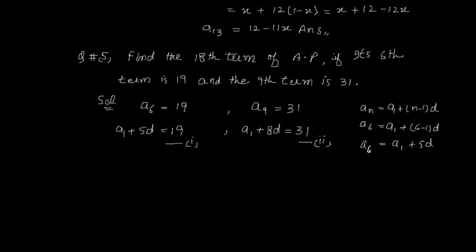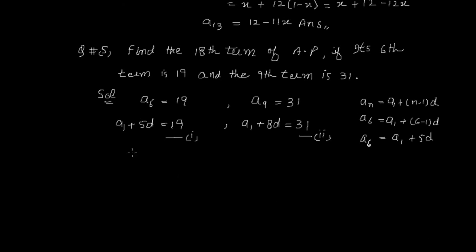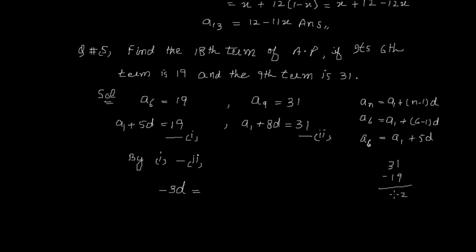दो values चाहिएं, इसलिए दो equations बनाई हैं A1 और D में। अब equation (1) minus equation (2) करते हैं: A1 cancel हो जाएगा, 5D − 8D = −3D और 19 − 31 = −12। तो −3D = −12, D = 4।